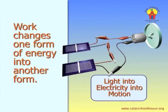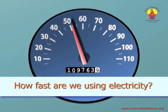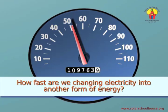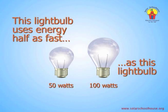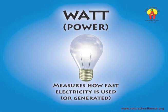There's one more electrical term we need to know. We need to be able to measure how fast we're using electricity. Look at these two light bulbs. The small light bulb uses less electricity than the big light bulb. The big light bulb uses electricity twice as fast as the small light bulb. What we're really talking about is how fast the light bulbs are converting electricity into light. We need a word that measures how fast they're doing this. That word is watt. The small light bulb uses electricity at a rate of 50 watts. The big bulb uses electricity at a rate of 100 watts. Watts measure how fast electricity is used — how quickly we convert electricity into other forms of energy, like light or heat.